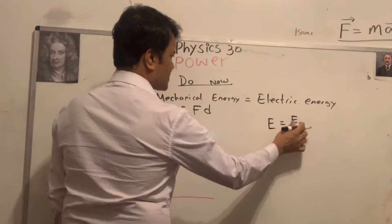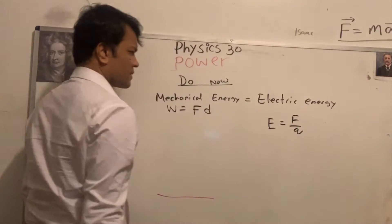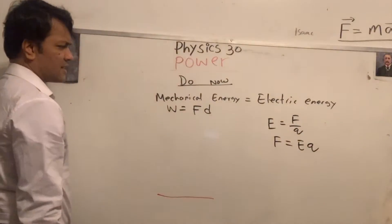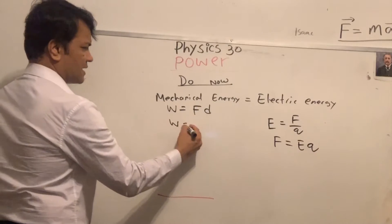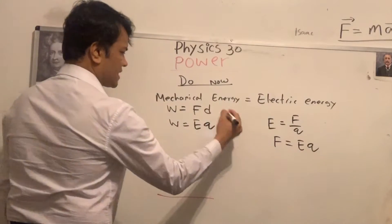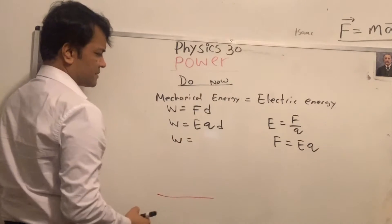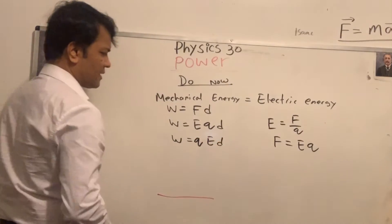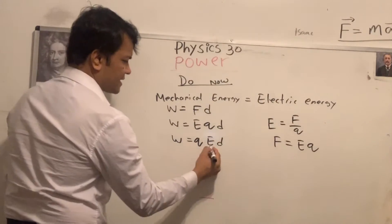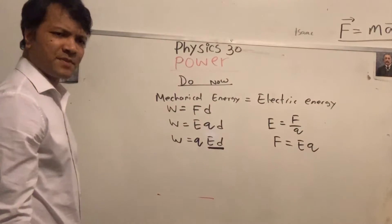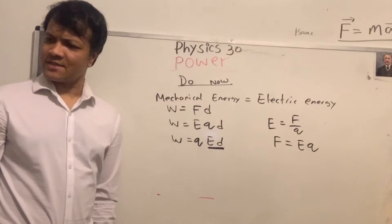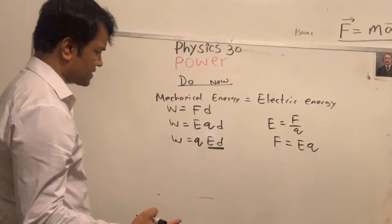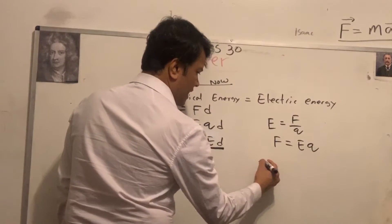E equals F over q, so F equals Eq. Then we can replace F with Eq in W = fd, giving W = qEd. Now, Ed has a special name — Ed is voltage! Let's see why.